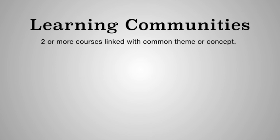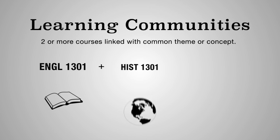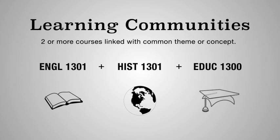Some of the special courses that you might be interested in include Learning Communities. Learning Communities consist of two or more courses linked with a common theme or concept. For example, there is an English 1301, History 1301, and ADUC 1300 Learning Community. In this particular Learning Community, the theme or concept is Integrative Learning, which means that you utilize what you are learning in these courses and connect the experiences and ideas to your other courses as well as outside of class.